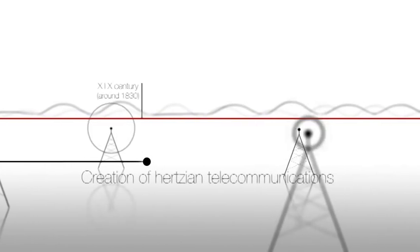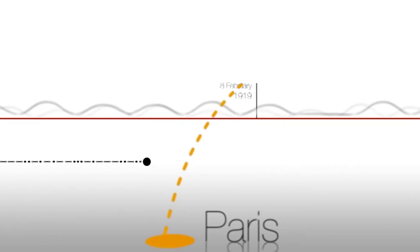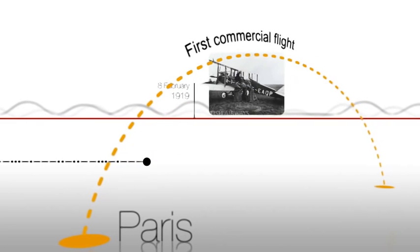Hertzian communications began in the 18th century, and they are used for aviation air-ground communication, navigation, and surveillance.